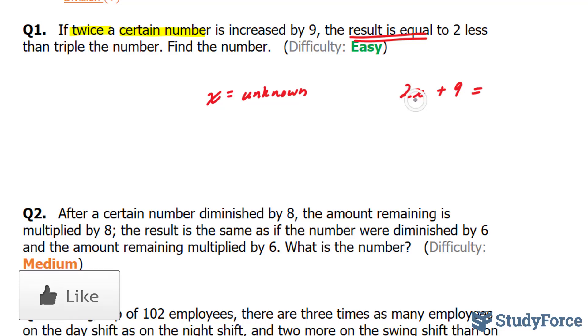two less than triple the number. Now, if twice the number is 2x, triple the number will be 3x. So this is equal to 3x, two less, minus two. And that's it.